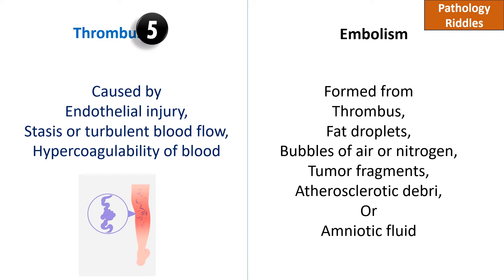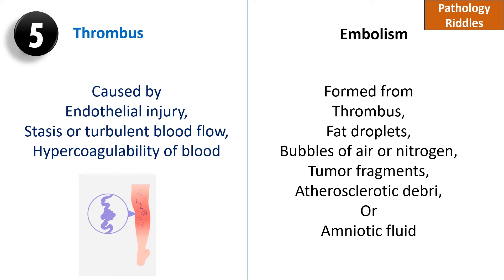A thrombus is caused by endothelial injury, stasis or turbulent blood flow, and requires hypercoagulability of the blood. An embolus can be formed from thrombus, fat droplets, bubbles of air or nitrogen, tumor fragments, atherosclerotic debris, or amniotic fluid.